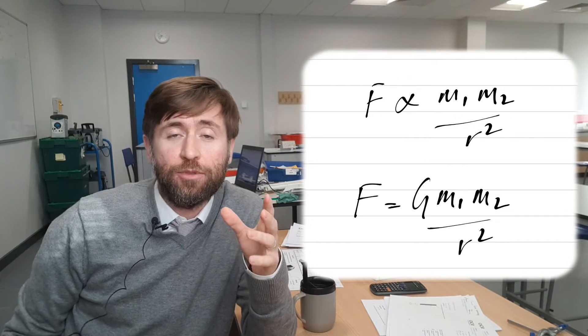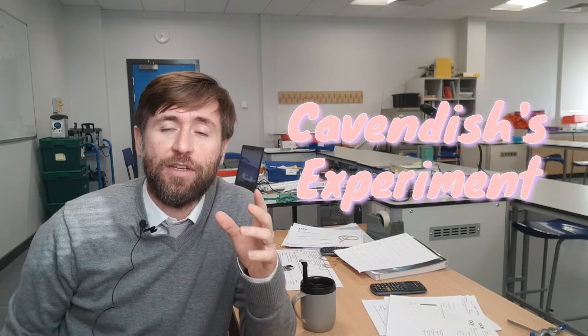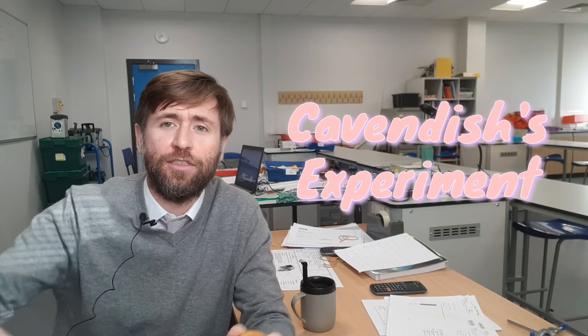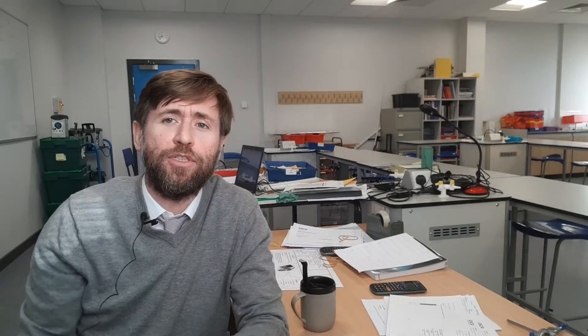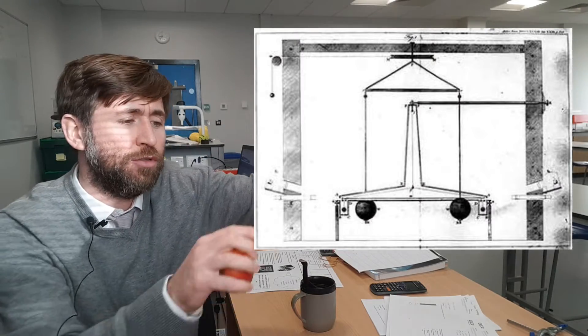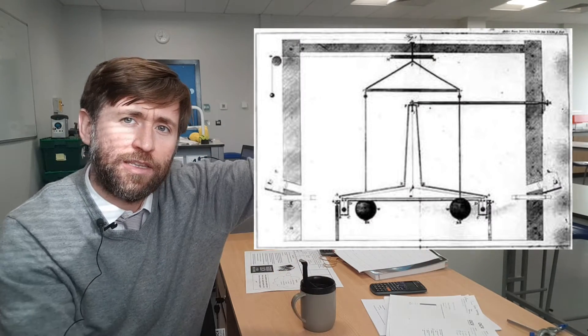The experiment to measure that constant was done by Henry Cavendish just towards the end of the 1700s. And what he essentially had was a giant kind of swing, a torsion balance which could twist. And it had two massive balls on the end of a stick and that stick could twist.